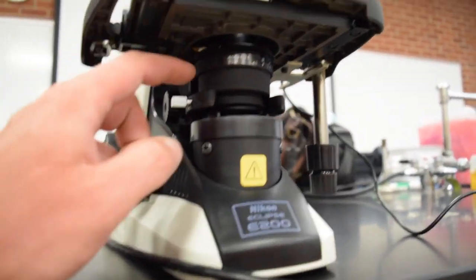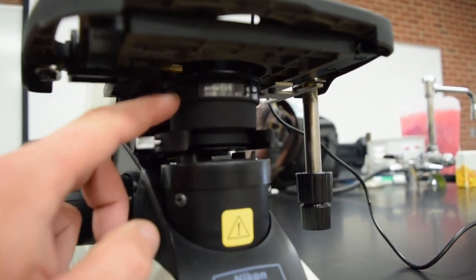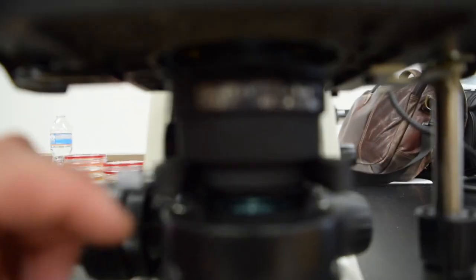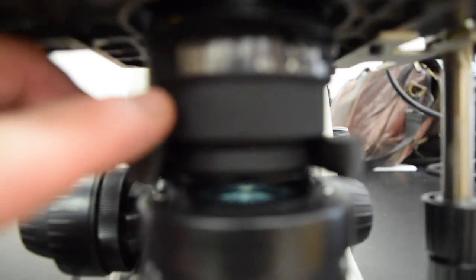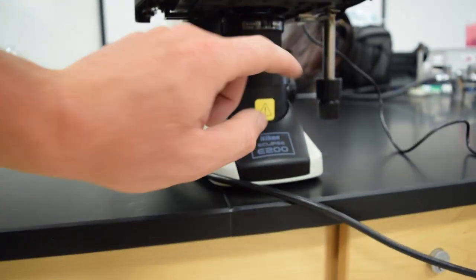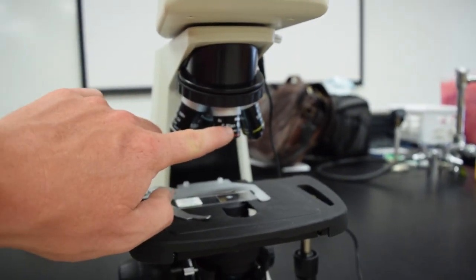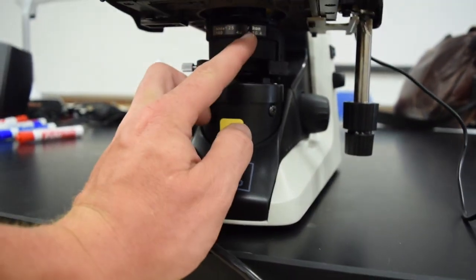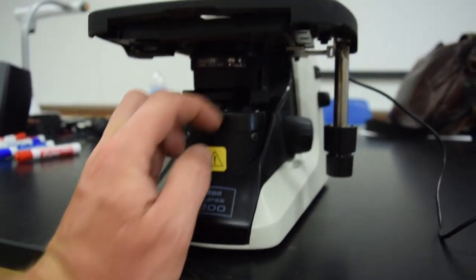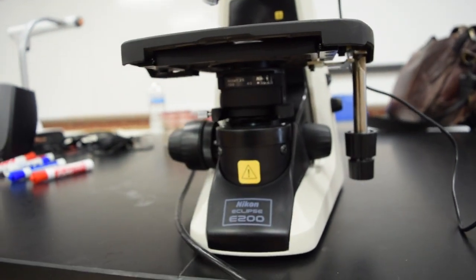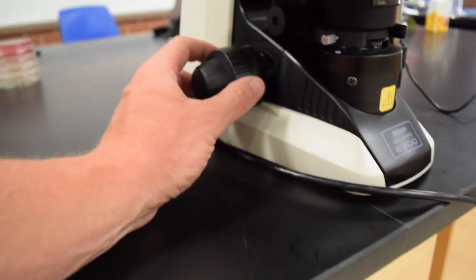Underneath the stage is our light condenser diaphragm. There's this little slider here on the diaphragm that you move when you move the objective. So if you're at the 4x objective, you move this slider to the 4 position on the light condenser.